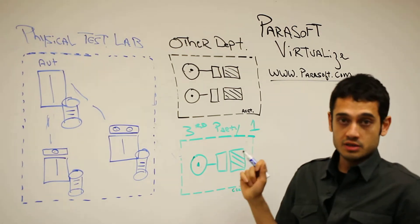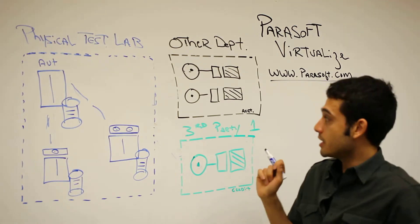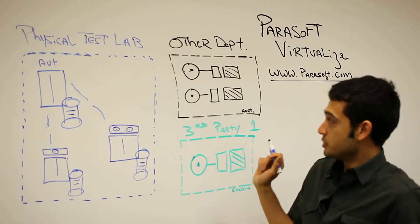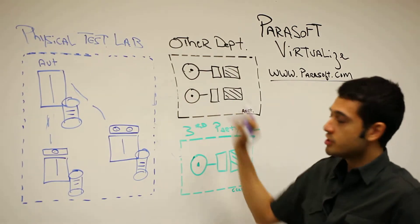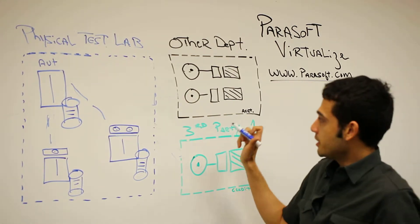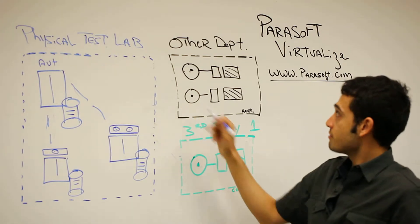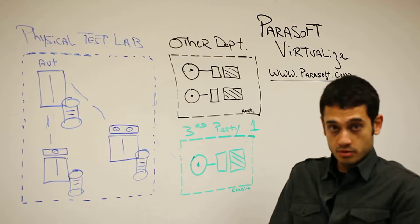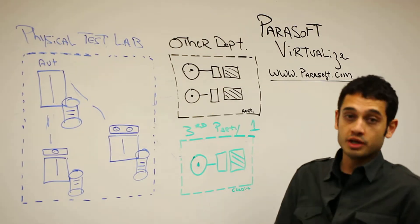So how can Parasoft Virtualize help you? The first thing we do is remove the dependencies. We take them out of the picture. The way we do that is by capturing traffic going to these other departments and creating real-world assets that mimic the application behavior.